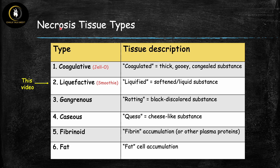Here are the six different necrosis tissue types. The names actually just describe the tissue. Coagulative necrosis describes tissue that is coagulated — congealed, thick, and gooey. Liquefactive means the tissue is liquefied, soft, and watery — totally opposite of coagulative. So these names are very helpful in remembering what the tissue looks like.